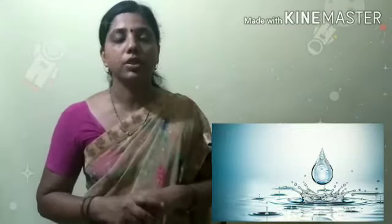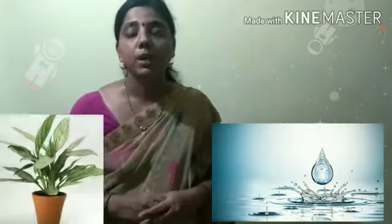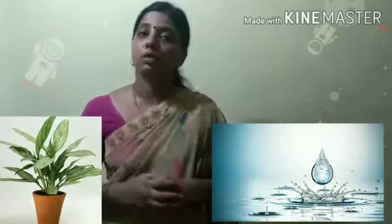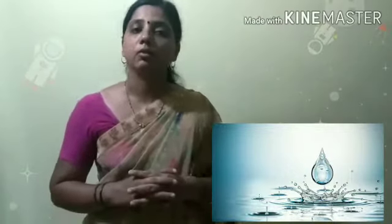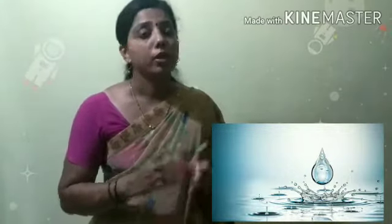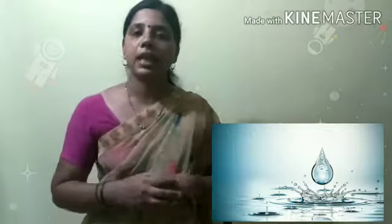Third, water. Water is the most important thing, which is available only on Earth. It is not available on any other planets. Water is used by plants to prepare food, and human beings also need water for all their daily activities.